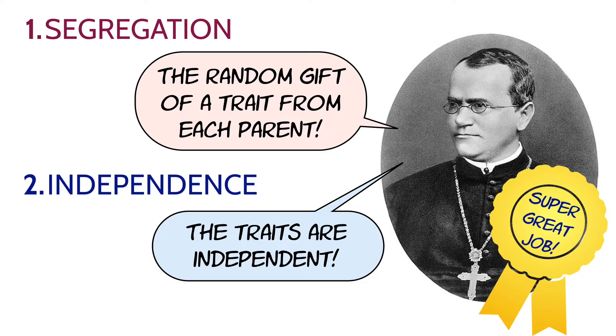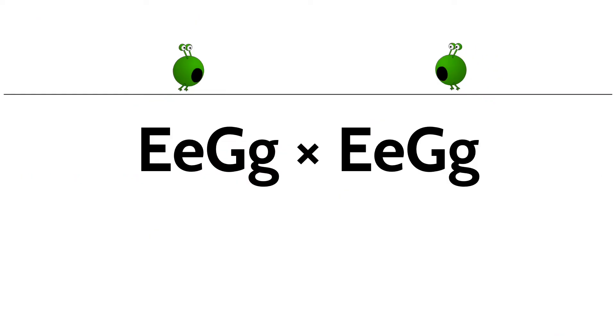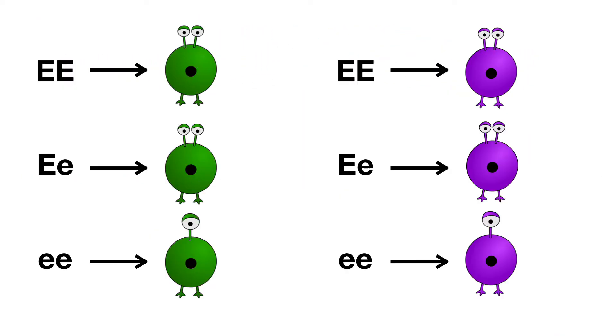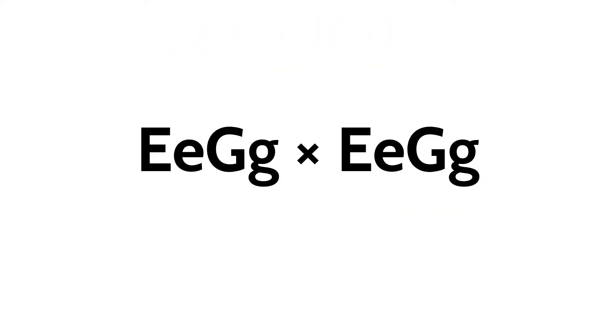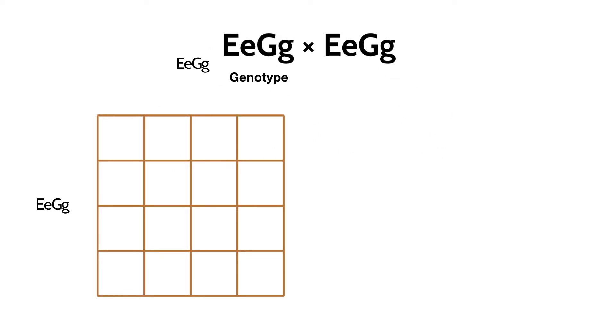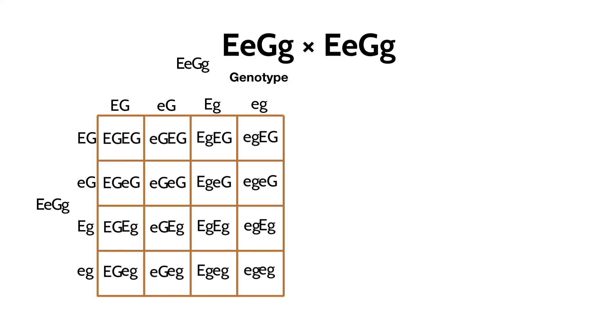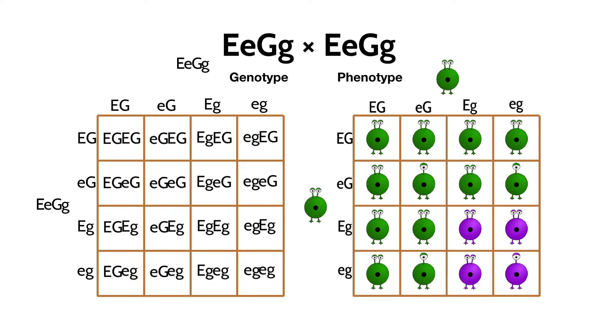Whether an alien was purple or green had nothing to do with if it had two eyes or one. So let's look at a cross of two heterozygous aliens where having two eyes is dominant, that's the capital E, and having one eye is recessive, represented by the lowercase e. Now we need to make our Punnett square a lot bigger because we need to consider each of the equally likely possibilities. Small e, small g, big E, small g, small e, big G, and big E, big G. We'll bring those possibilities across into the square, just like we did before, and then we'll look at the phenotypes.